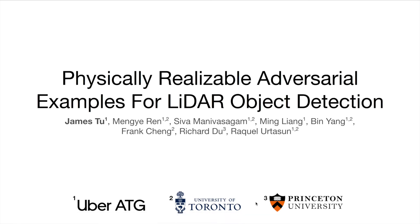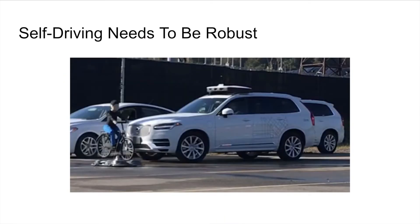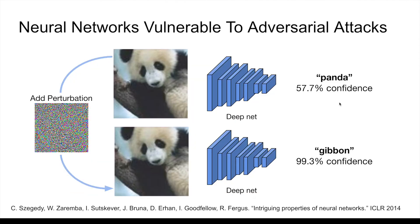Physically Realizable Adversarial Examples for LiDAR Object Detection. Self-driving is a highly safety-critical application for computer vision, where human lives may be at stake. Therefore, it's important to question the robustness of our self-driving models. Specifically, modern systems typically rely on deep neural networks, which are susceptible to adversarial examples. To understand and better defend against these adversaries, we must first identify them.